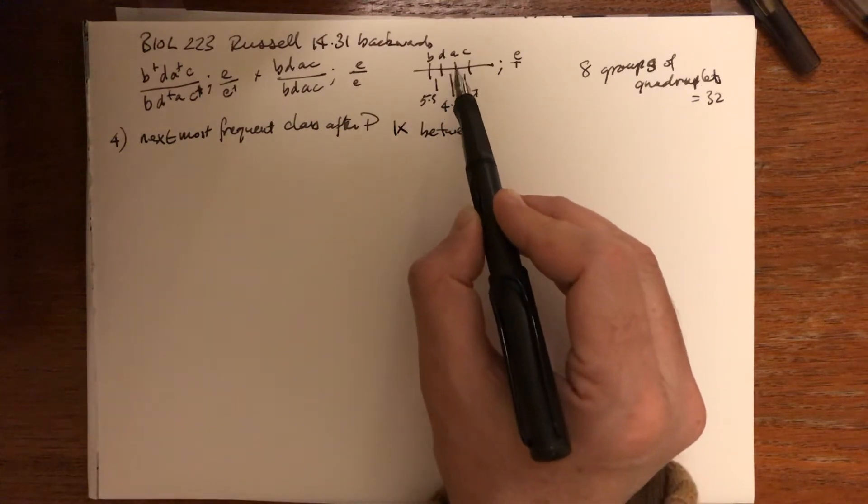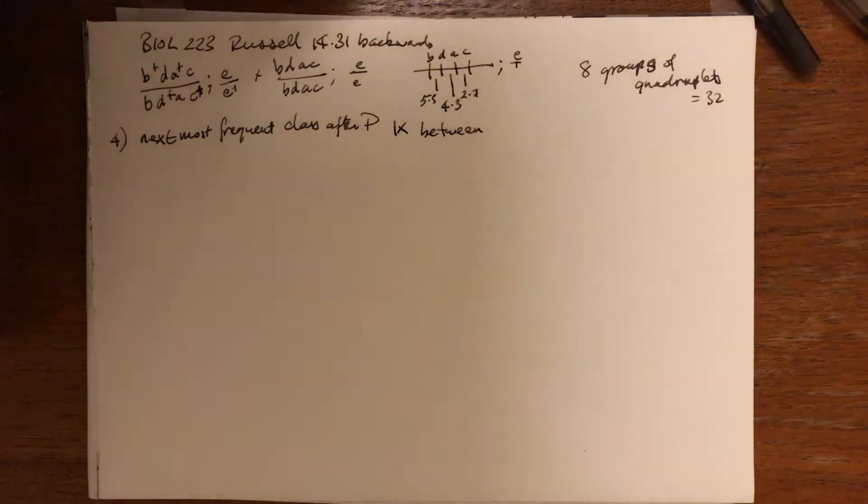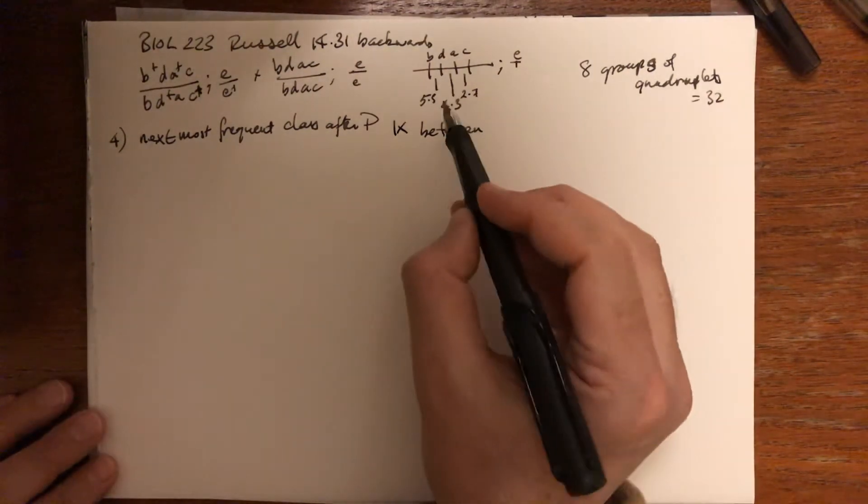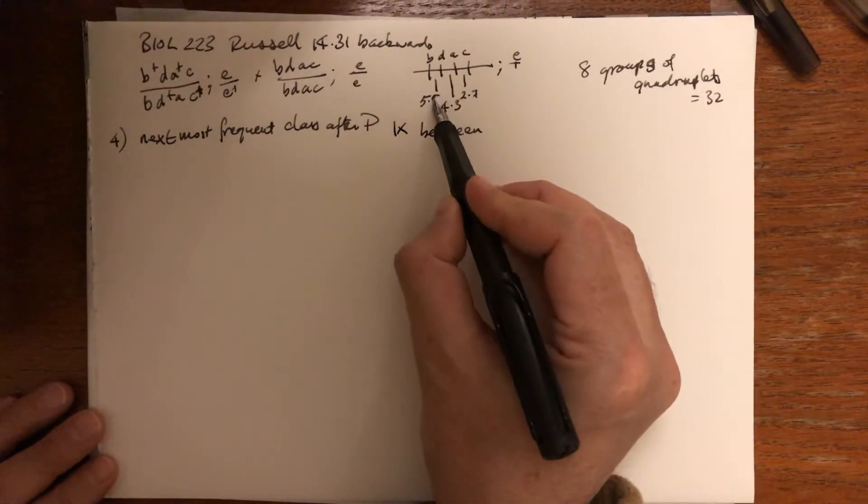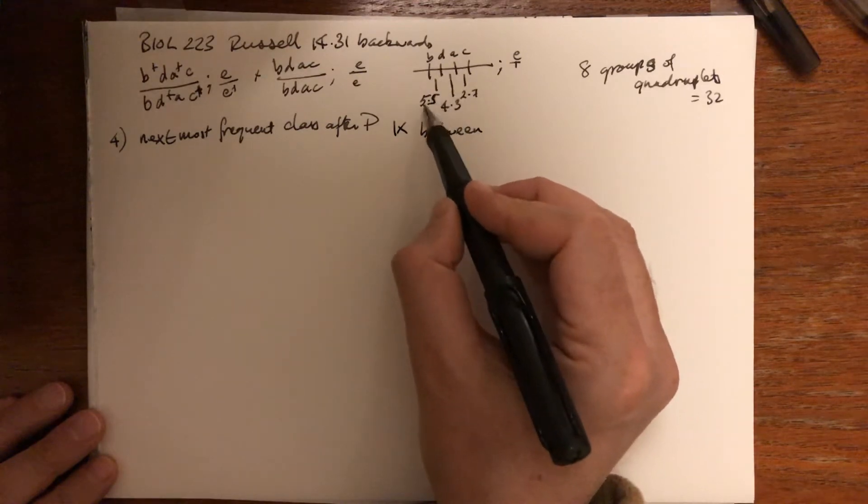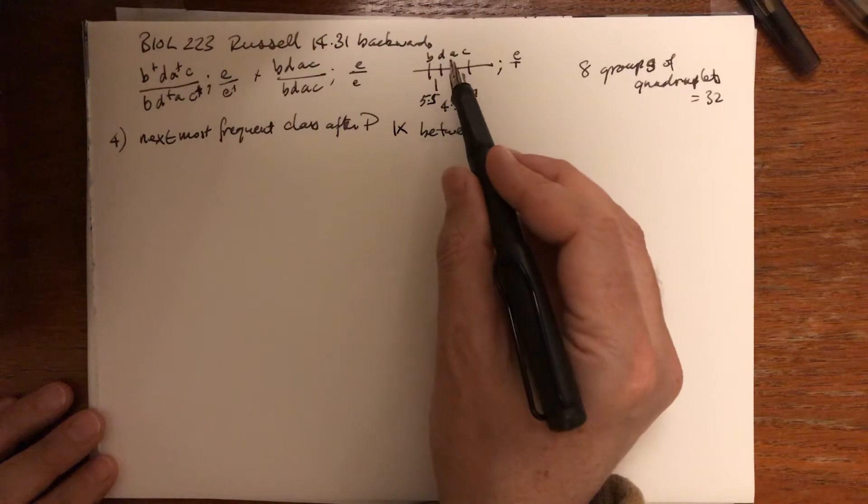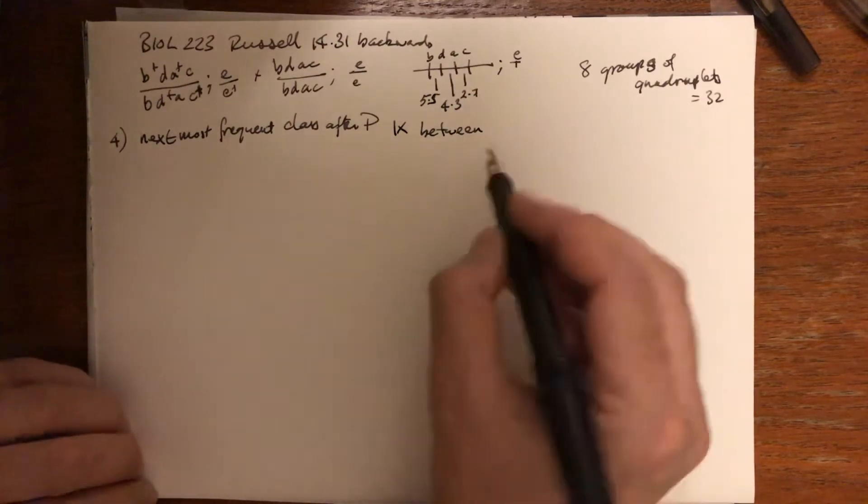The most likely place is between B and D because there are 5.5 map units, and that's greater than the distance between D and A or A and C.